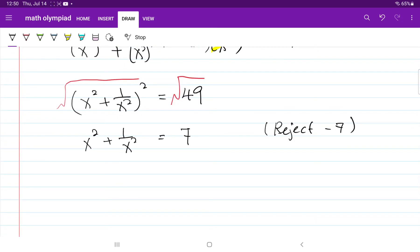Now we are going to simplify the left side of the equation further by using the same trick. I'm going to rewrite this again as x squared plus 1 over x squared plus 2 equals 7 plus 2.